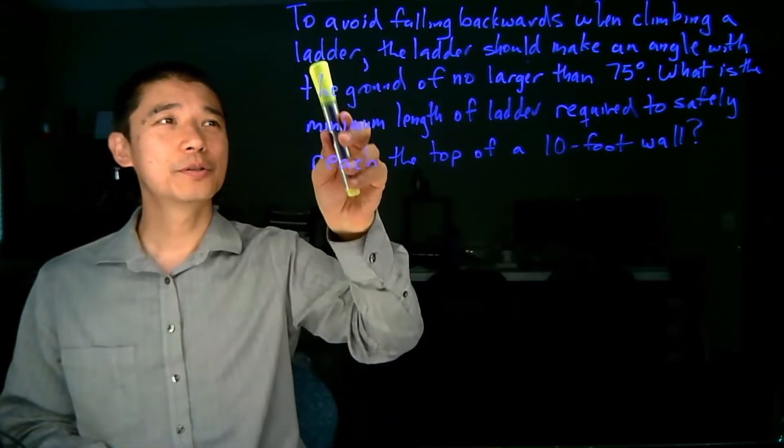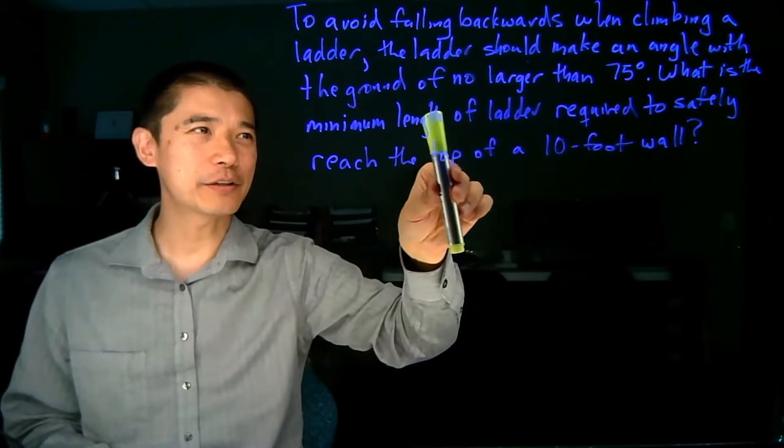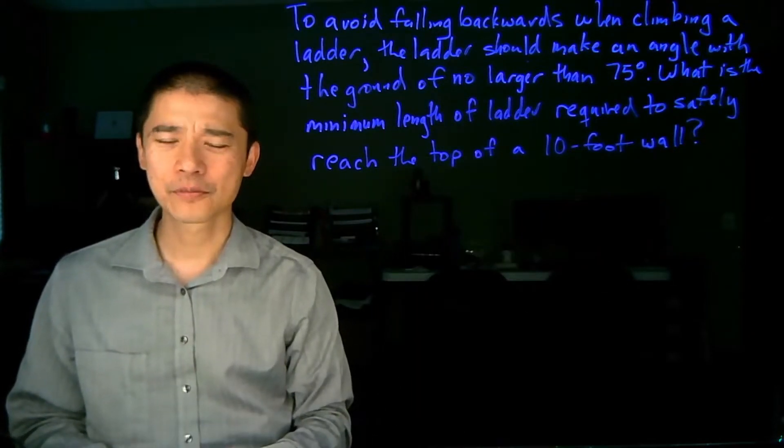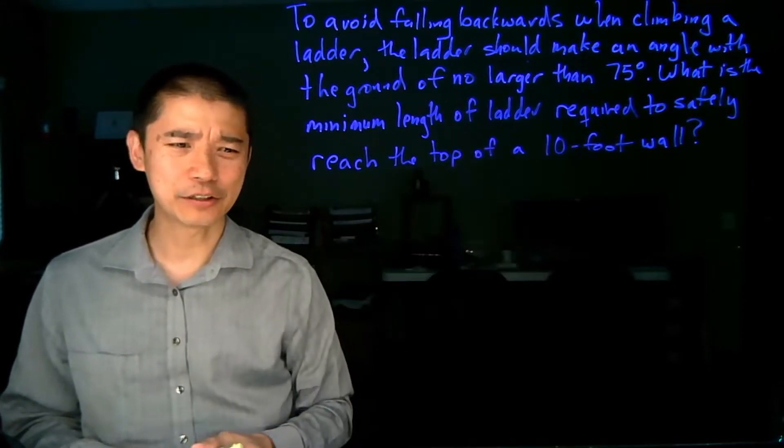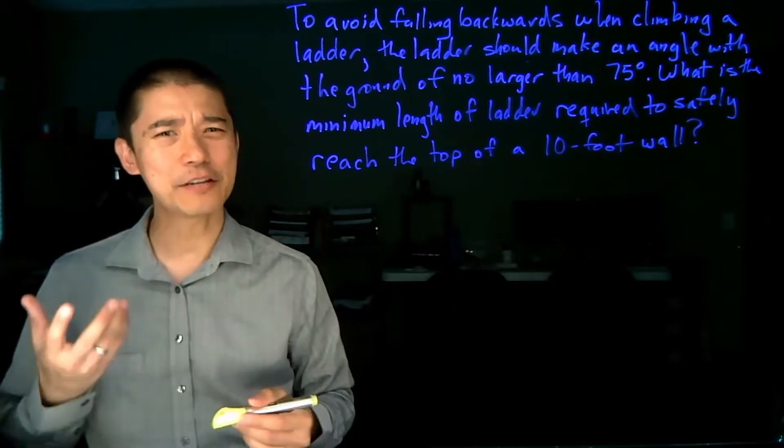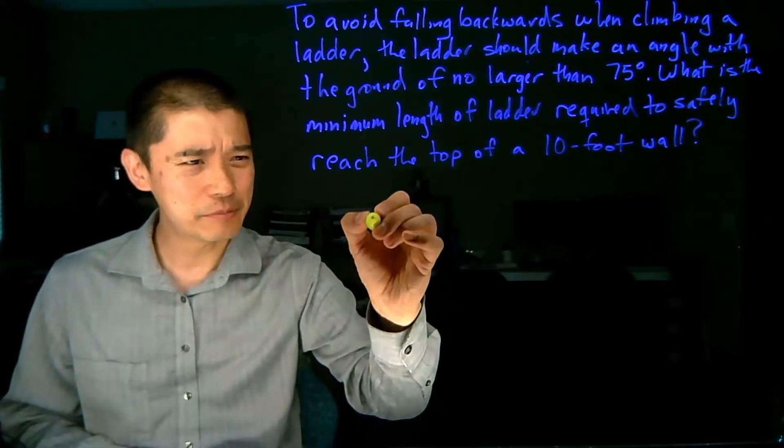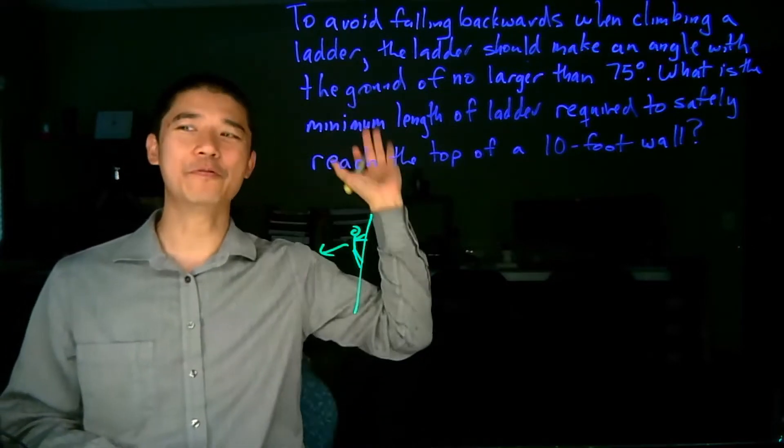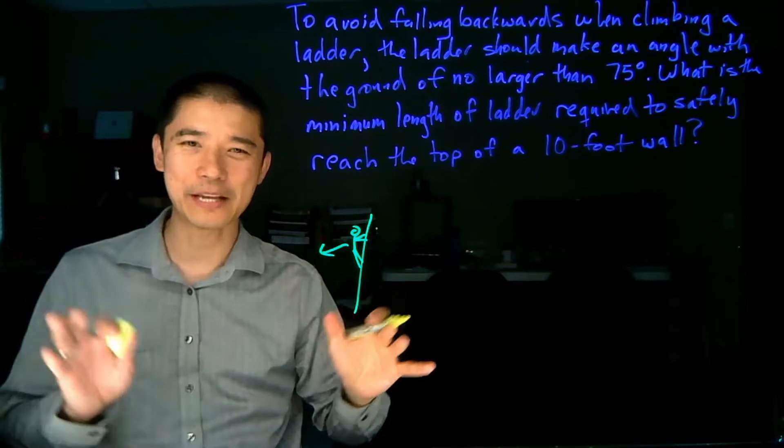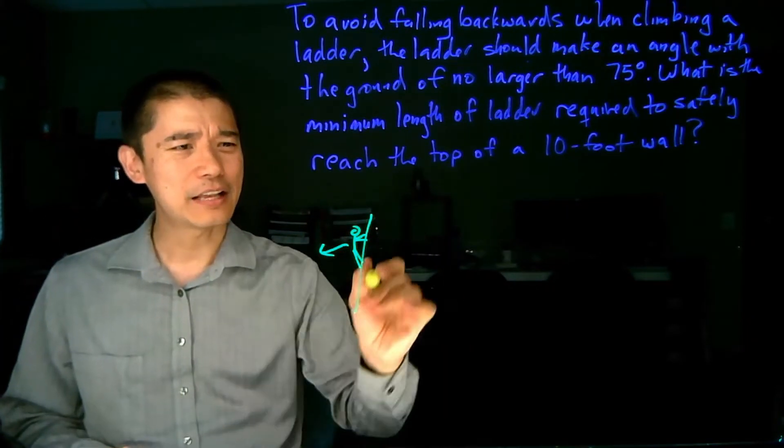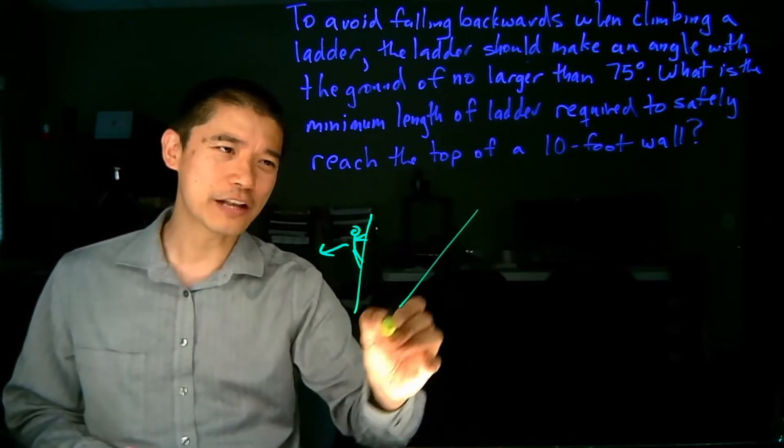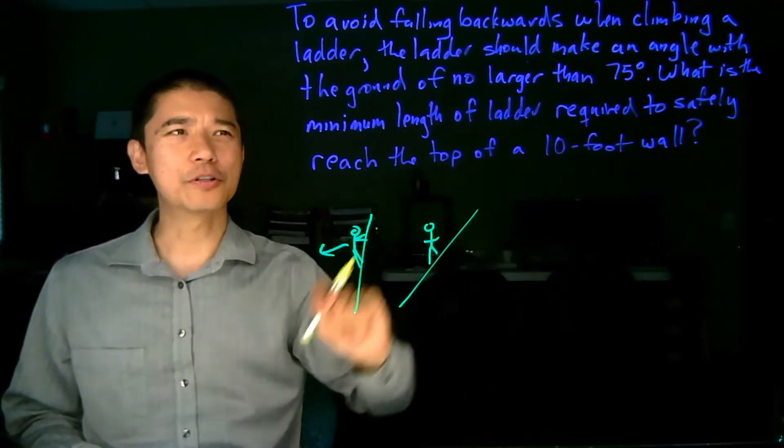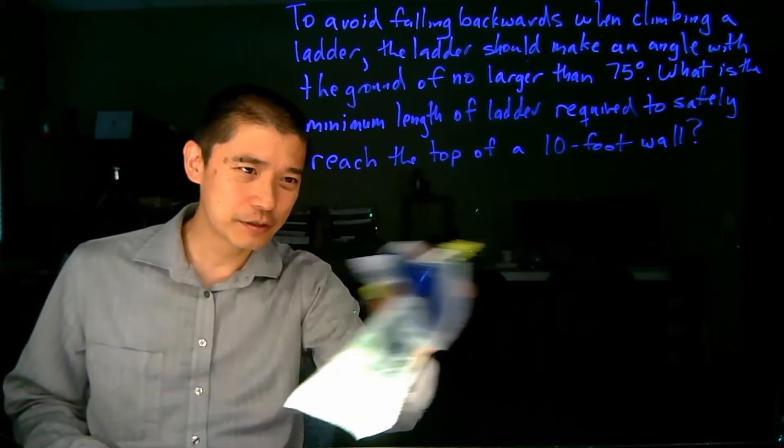So here's another example. To avoid falling backwards from climbing a ladder, the ladder should make an angle with the ground of no larger than 75 degrees. What is the minimum length of ladder required to safely reach the top of a 10-foot wall? So let's think about this for a moment. To avoid falling backwards when climbing a ladder. If you don't have a lot of experience climbing ladders, you may have to think about this for a moment. What does it mean to fall backwards? Well basically, if you imagine you have a ladder here and you have someone trying to climb the ladder, if their weight is too far backwards, then the ladder will fall down this way. It has to do with the center of mass and things like that. And so the way you prevent that is you make this angle more shallow, so that way you won't be falling backwards anymore. So that's the first part. Do you understand the words? Do you understand the setup of the problem?